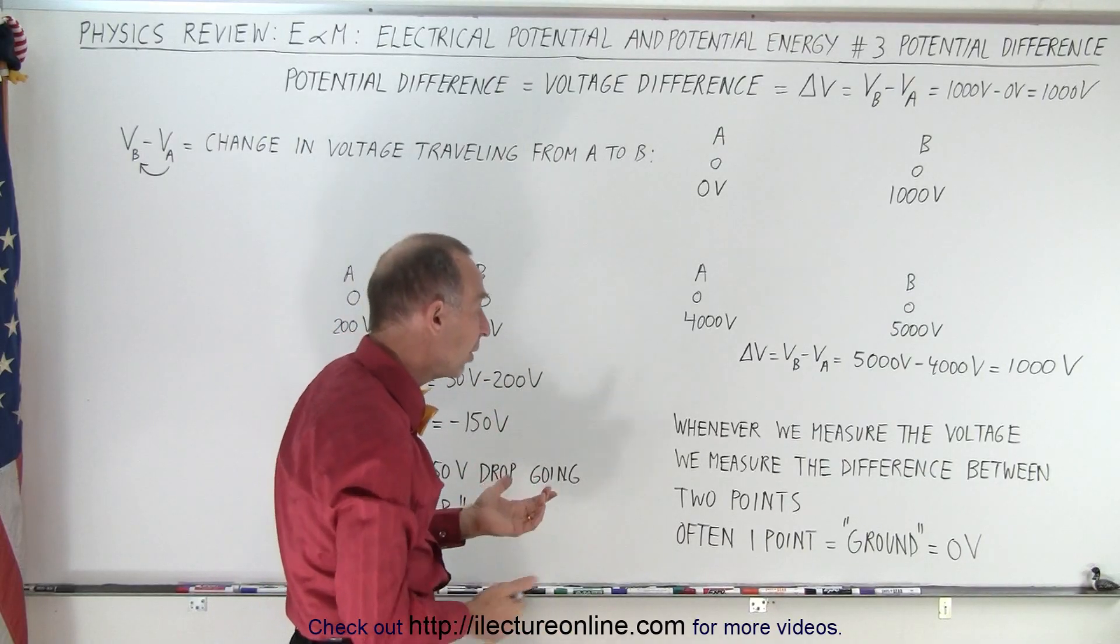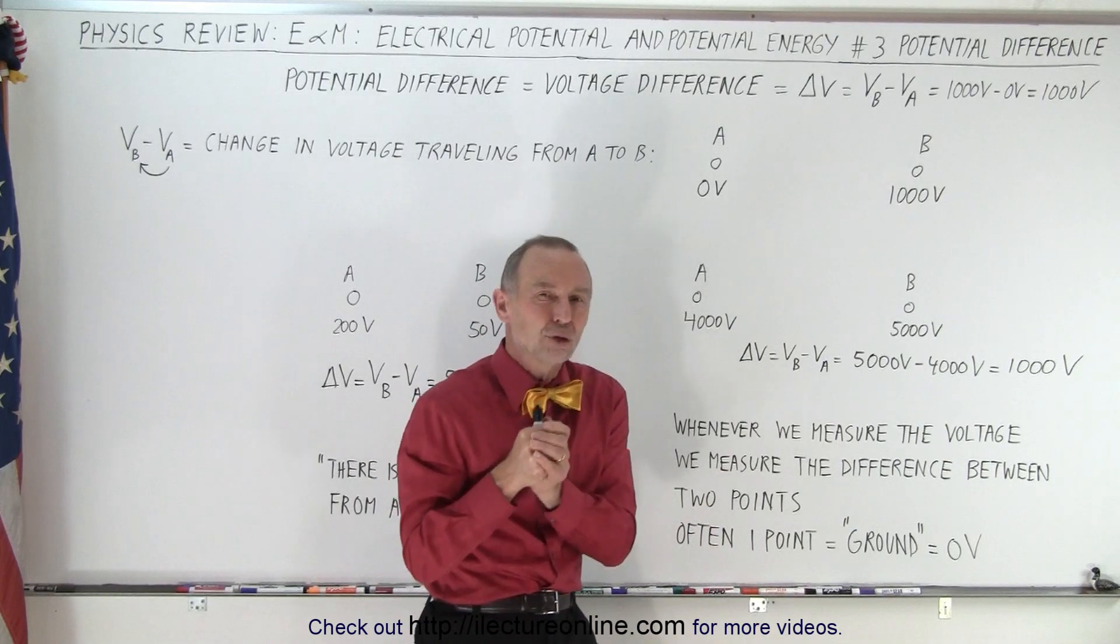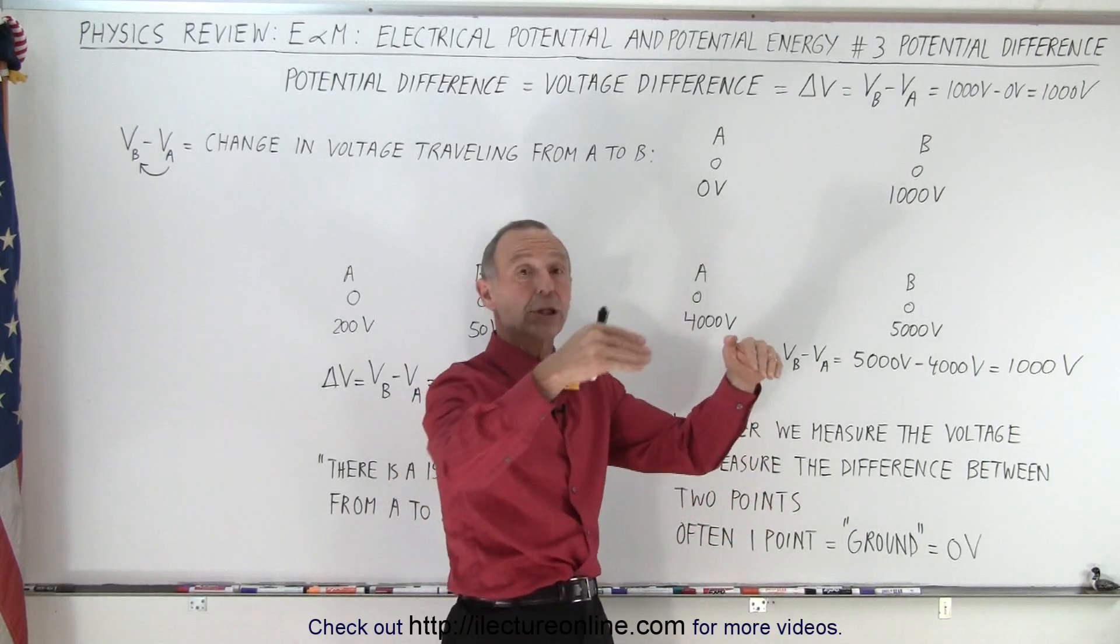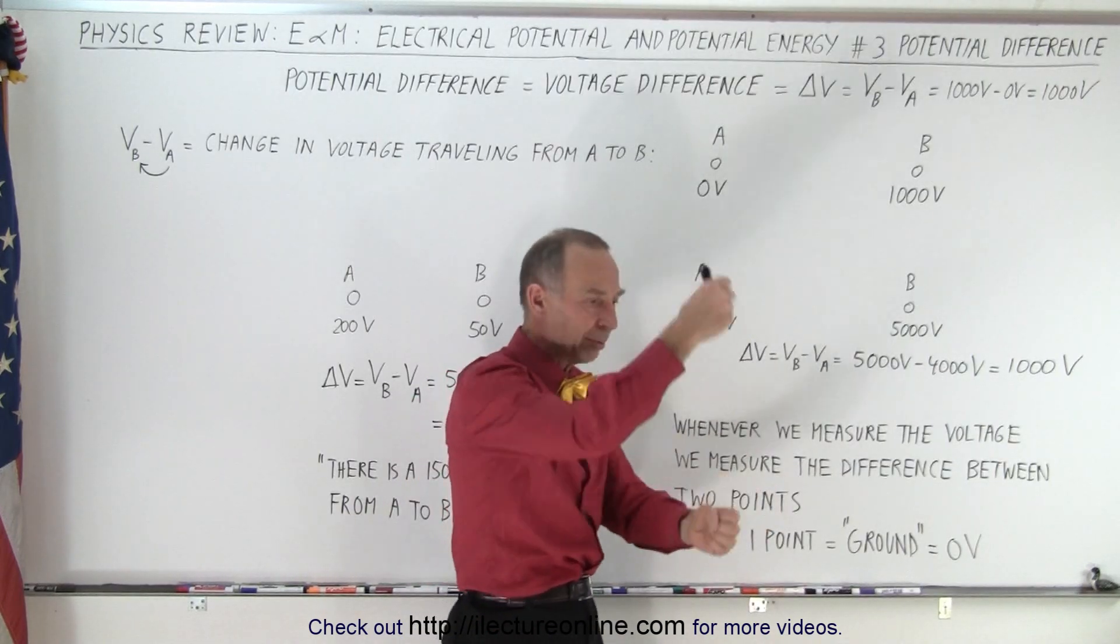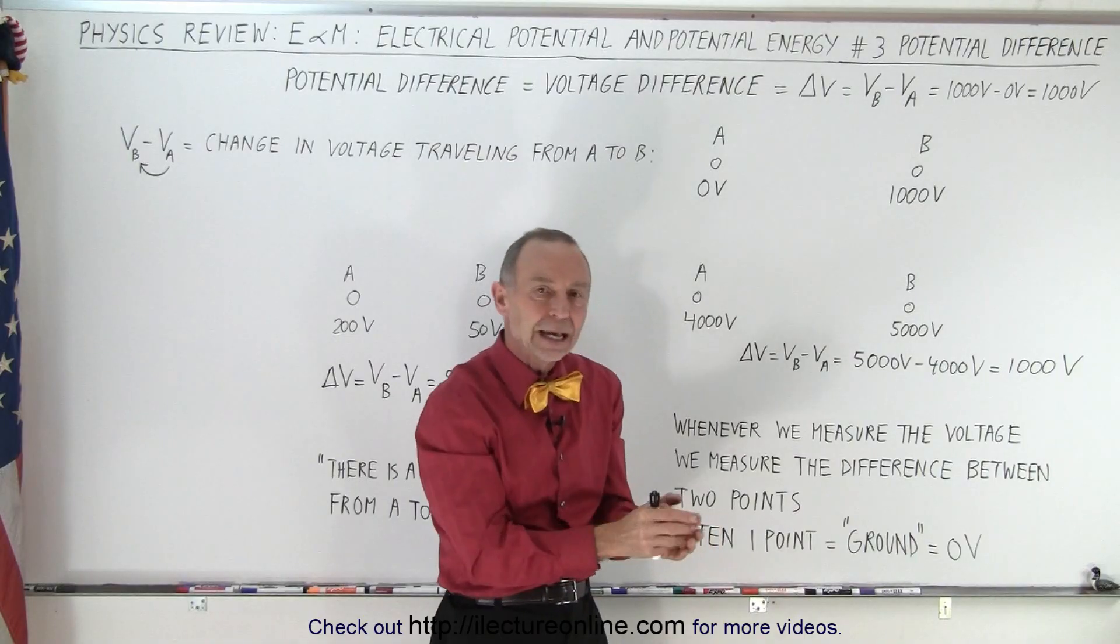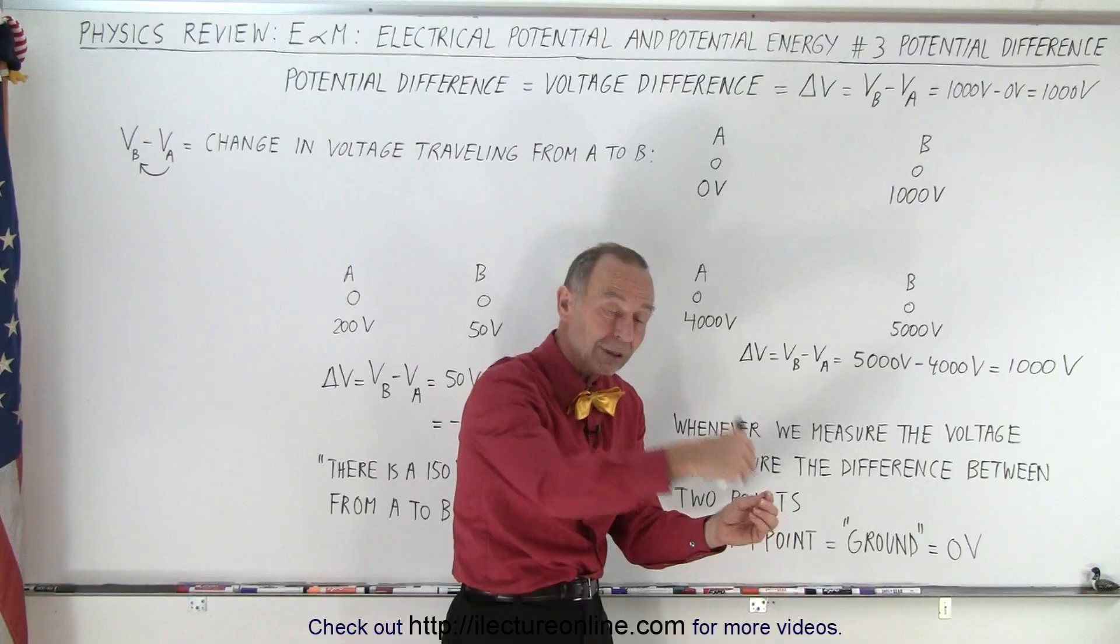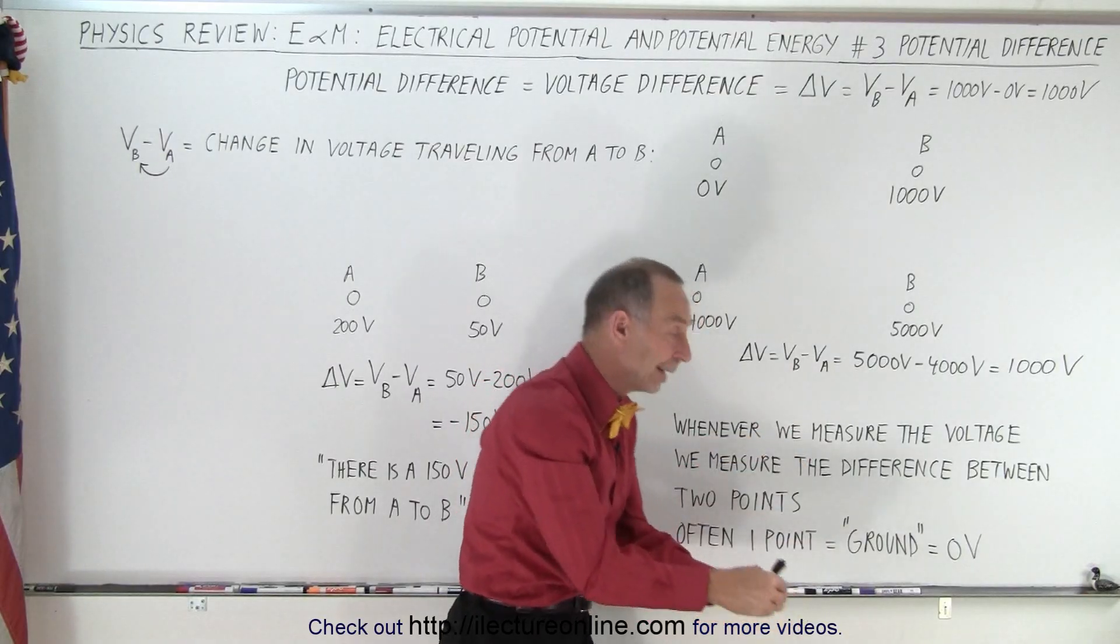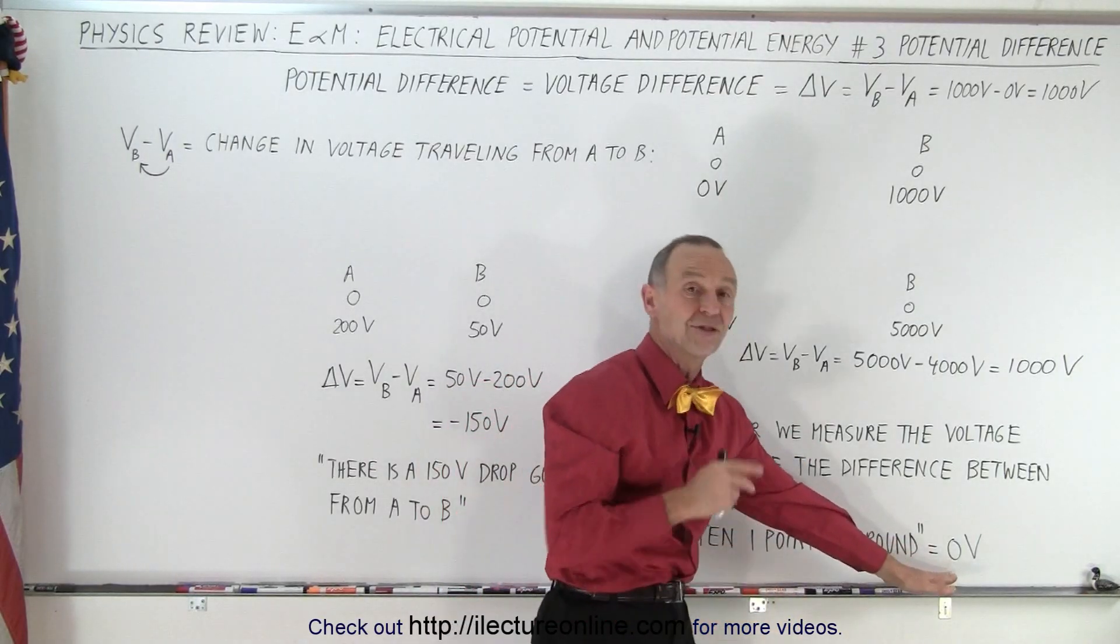Now quite often we take one point and we connect it to ground. We can connect it to the earth through some wiring and some post, metal post that we put into the ground. We connect that and so that location that's connected to that wire that's connected to ground is then typically driven to about zero volts.